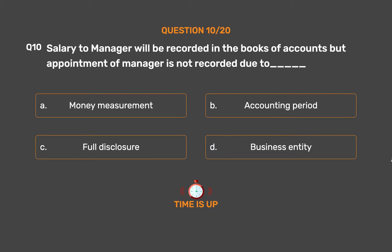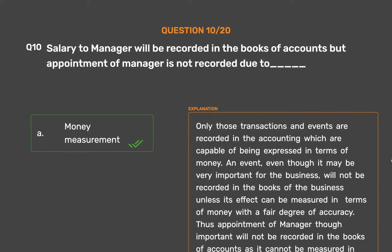The correct answer is Option A: Money Measurement. Only those transactions and events are recorded in accounting which are capable of being expressed in terms of money. An event, even though it may be very important for the business, will not be recorded unless its effect can be measured in terms of money with a fair degree of accuracy. Thus, appointment of a manager, though important, will not be recorded.